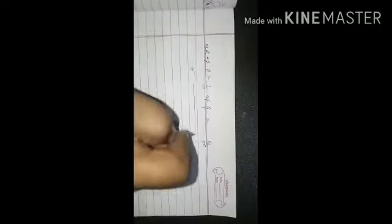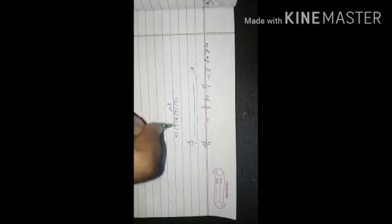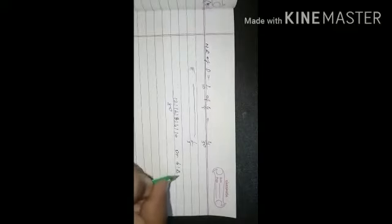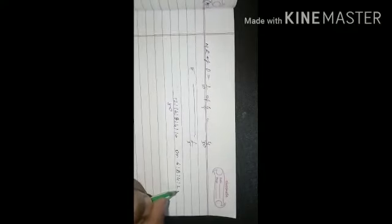And E's share is 1 by 5 or 10 by 50. So new ratio becomes 12 is to 16 is to 8 is to 4 is to 10, or you can say 6 is to 8 is to 4 is to 2 is to 5. This is our new profit sharing ratio.